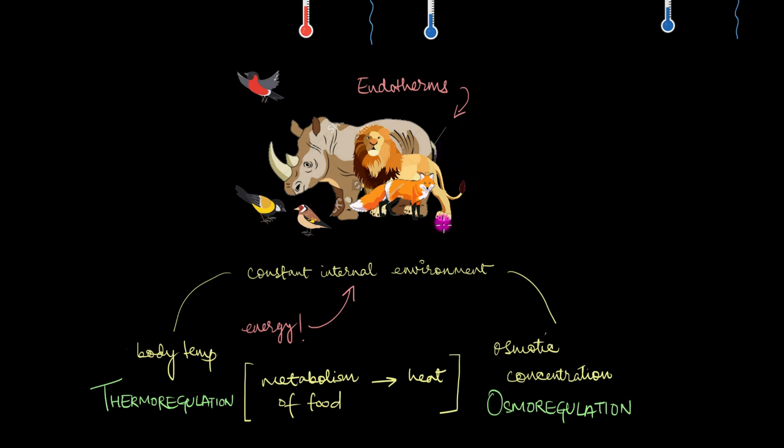For example, if your body wants to generate heat, it will do so by releasing energy from the breakdown or metabolism of food. This thing where we are maintaining our own body heat or body temperature is called thermoregulation. And when we are maintaining our osmotic concentration, then that is called osmoregulation. And only us warm-blooded animals, or in a fancier way, endotherms can do this. We are the only ones who can thermoregulate and osmoregulate.